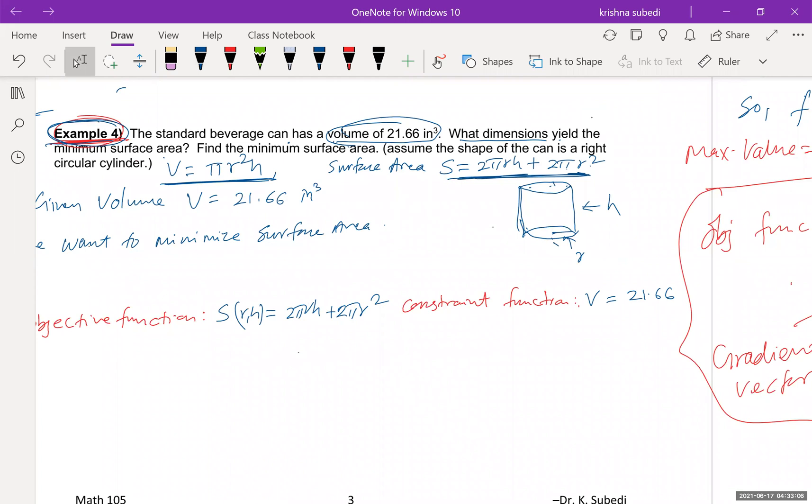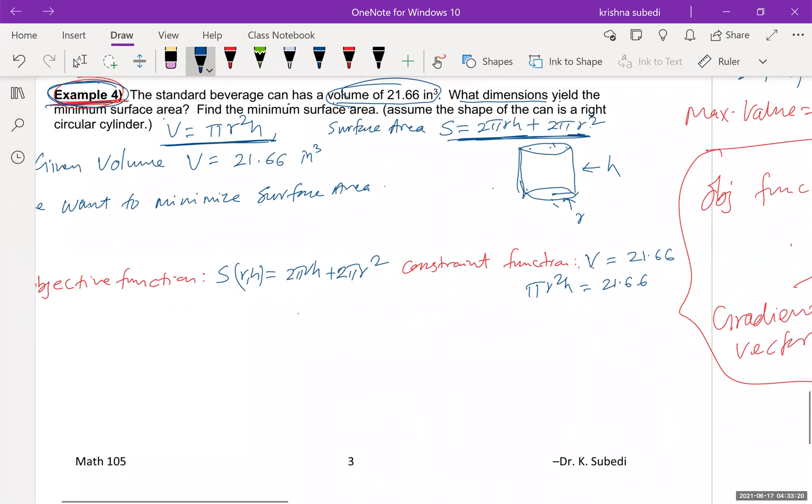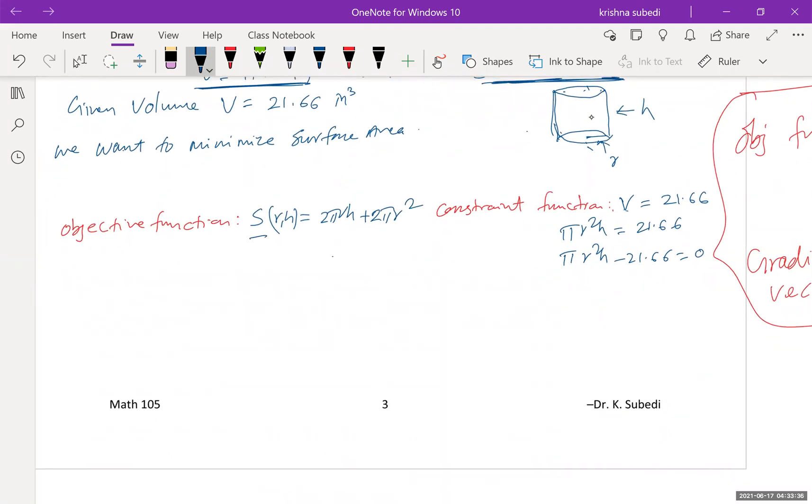We change the English language into mathematical language. Remember, the volume, the formula for the volume is pi r square h equals 21.66. And we know that the constraint function must be, right inside must be 0. So you can write pi r square h minus 21.66 equals 0. So we have an objective function and we have a constraint function and we denote that by G, the function of r and h.